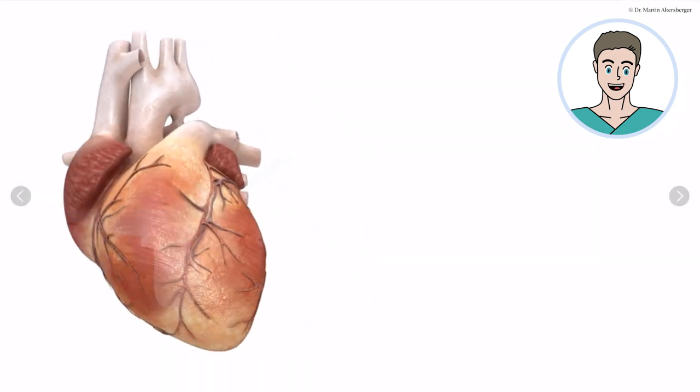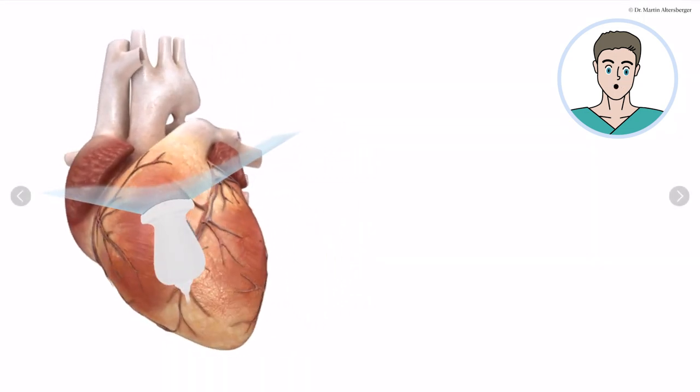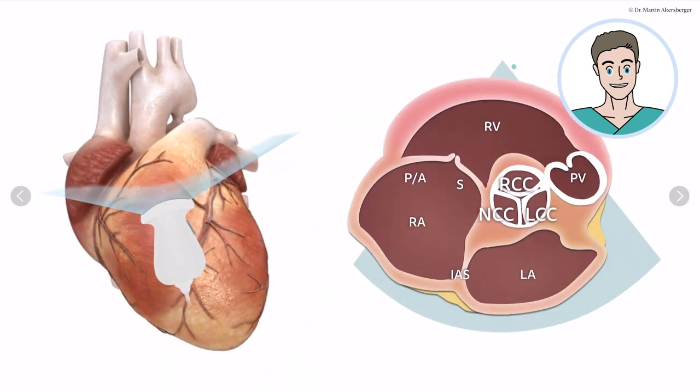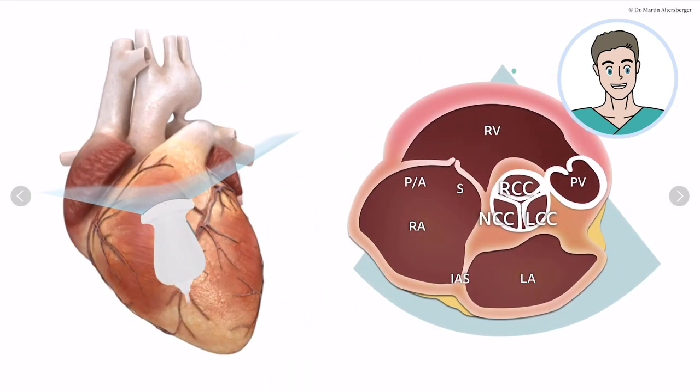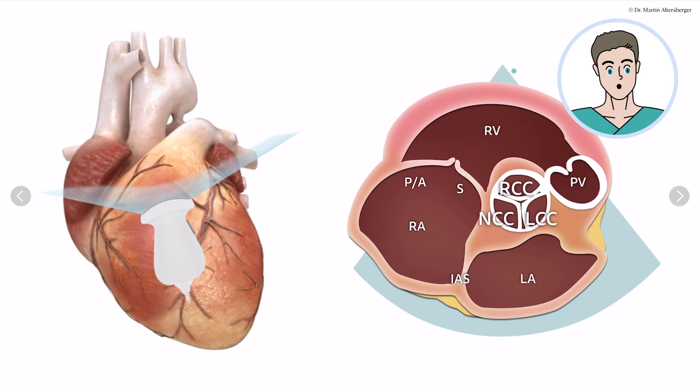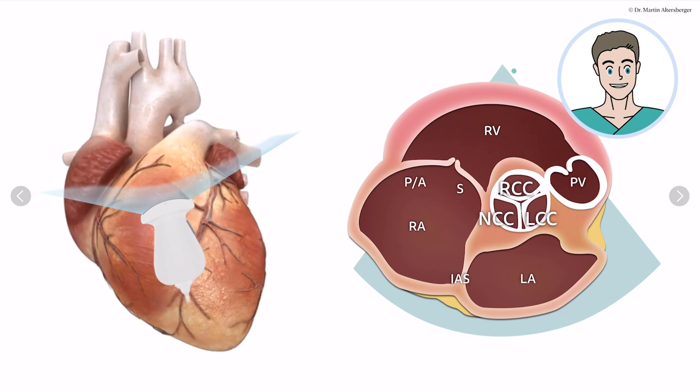How can we continue? What is the next view we need? We can move on to a parasternal short axis view.